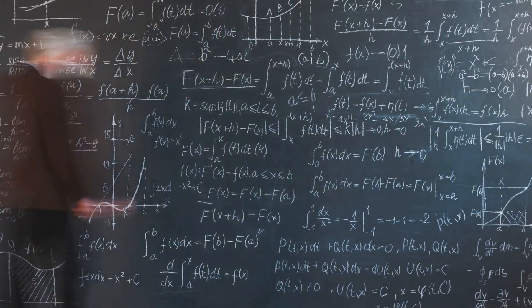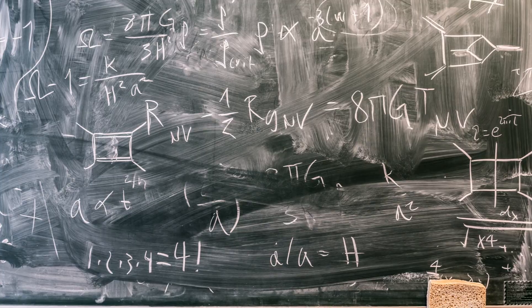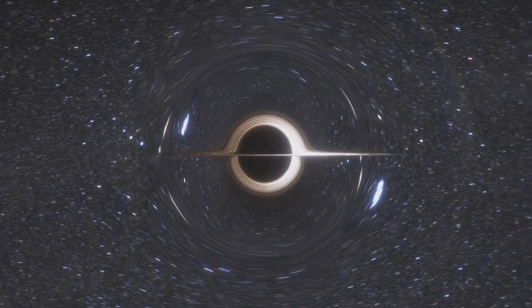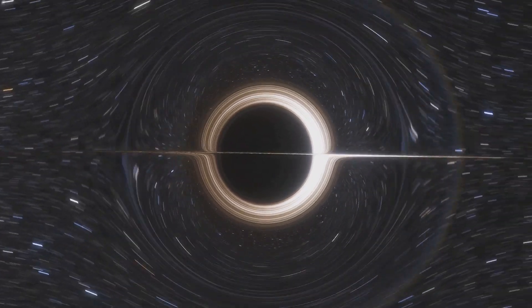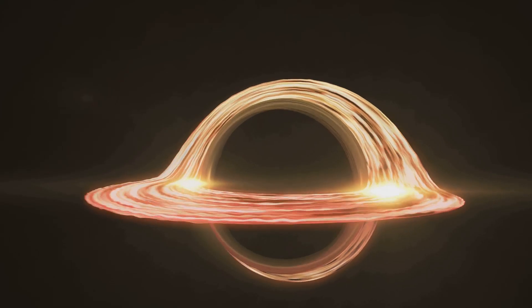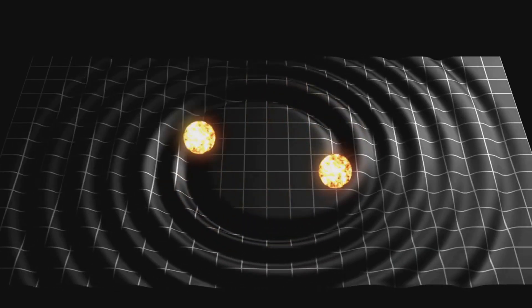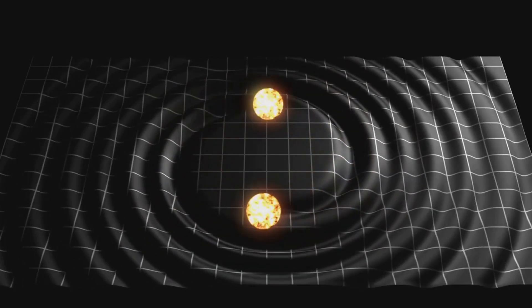These two theories have been incredibly successful in their respective domains. However, they clash violently when we try to combine them. This clash is most apparent in extreme environments like black holes and the very early Universe, where the immense gravity predicted by general relativity collides with the probabilistic nature of quantum mechanics. Resolving this conflict is the holy grail of modern physics: a theory of quantum gravity.